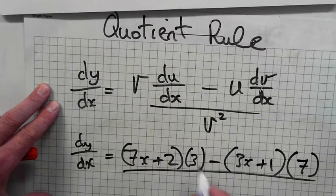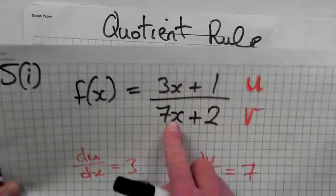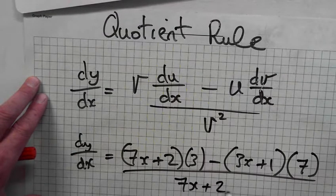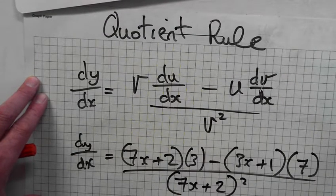Over v squared. What's v? v is 7x plus 2, squared.